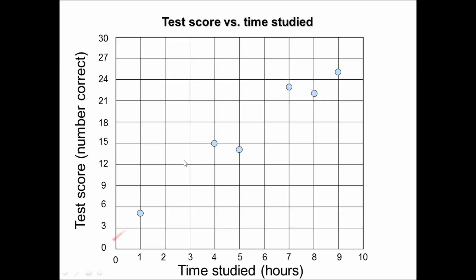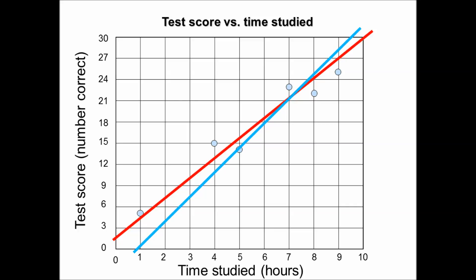Then if I were to draw my line of best fit I would draw one like this. Again, a line of best fit might vary for you — you might have a line that looks slightly different, and that's okay. You are estimating the points and trying to find a linear relationship between all of these dots. It's going to be an estimate; there's not a perfect answer.